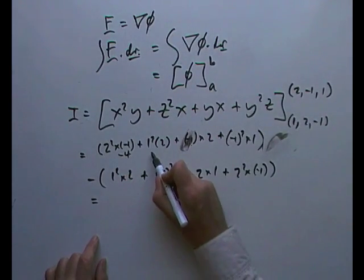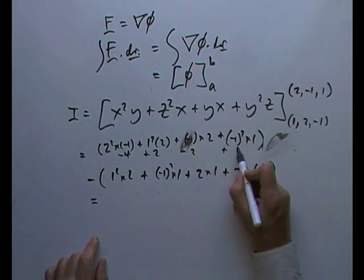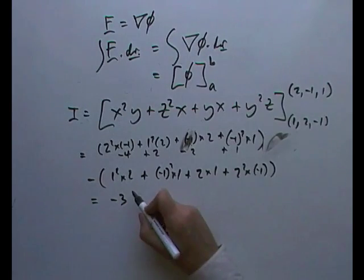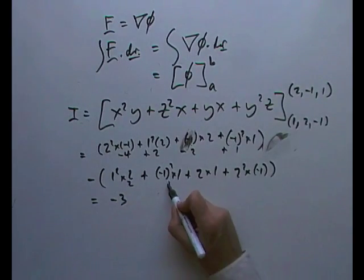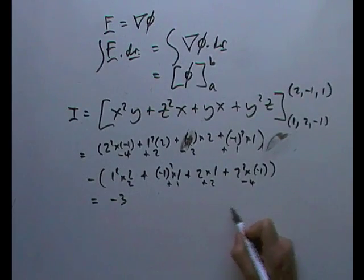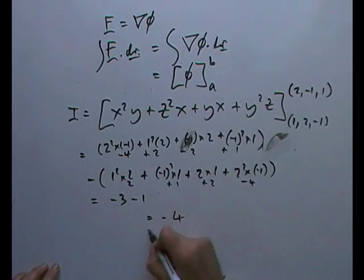So the final answer for that is going to be, I've got a negative 4 plus a 2 minus a 2 minus a 2 plus a 1, so that's just going to come to negative 3. For this part, I've got a 2 plus a 1 plus a 2 minus a 4, so that's just going to come to 1, so minus 1. The final answer, negative 4.